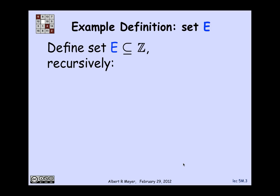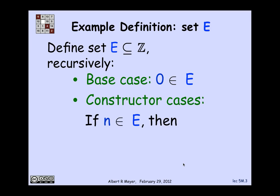Let's look at an example. I'm going to define a set E that's a subset of the integers recursively. The base case is that 0 is in E. The first constructor says that if you have an n that's in E, you can add 2 to it and get a new element in E, providing that n is not negative.